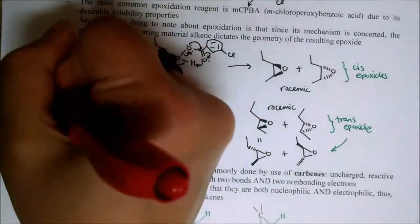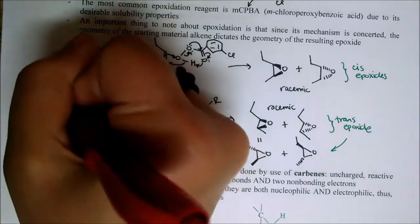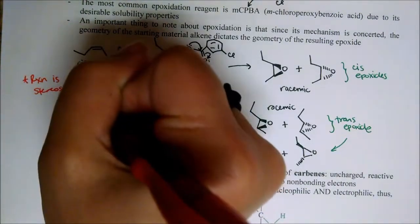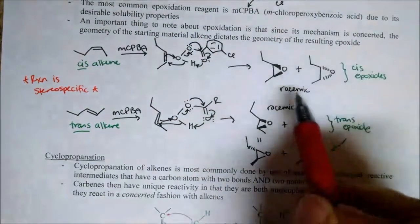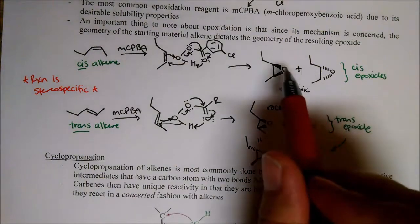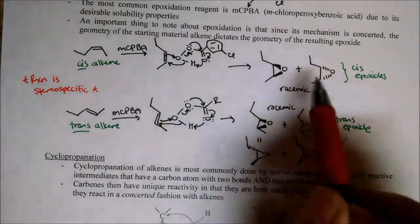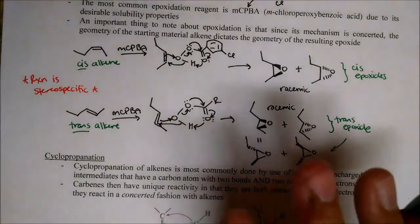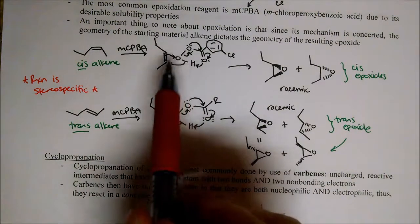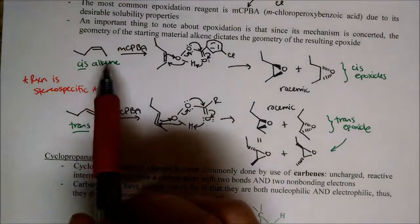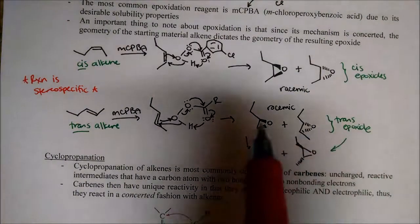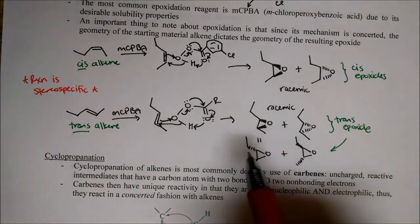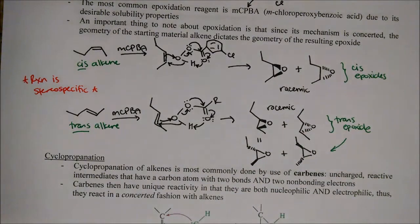This reaction is stereospecific — we've seen this term before when we talked about E2 reactions. Whichever geometry of the alkene we go in with gives us a particular geometry of our product. We go in with a cis alkene, we get a cis epoxide; we go in with a trans alkene, we get a trans epoxide. There's no choice in the matter — that's because of the mechanism. We can only react with one face of the alkene, so the cis or trans relationship is preserved.